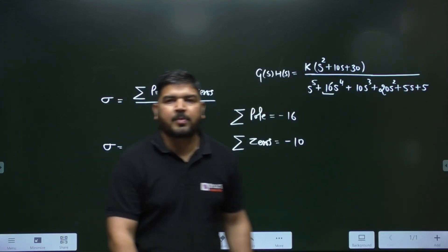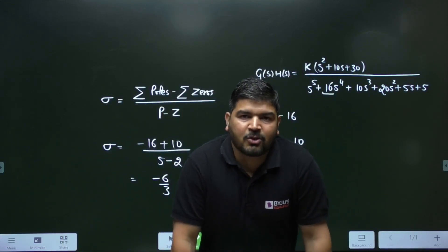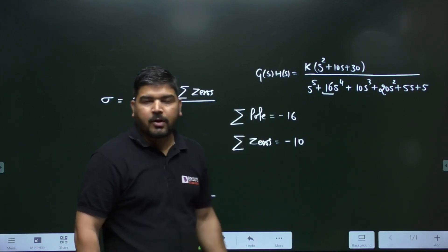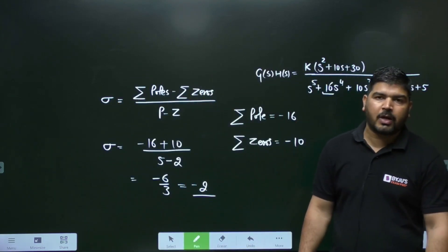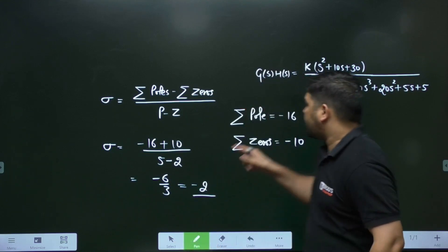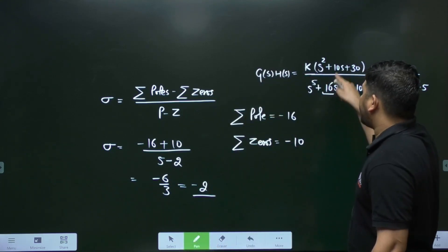So this is a good trick and I hope you like it. Use this trick to calculate the centroid point. No need to calculate the exact location of the poles and the zeros. You can calculate this value only with the help of coefficients.